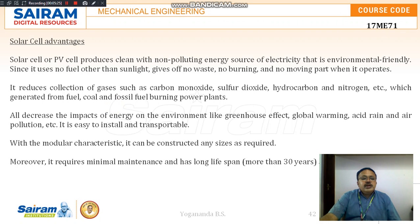Solar cell advantages: The PV cell produces a non-polluting, environmentally friendly source of electricity. Since it uses no fuel other than sunlight, it produces no waste and no burning takes place. There are no moving parts, and it reduces the production of gases such as carbon monoxide, sulfur dioxide, hydrocarbon, and nitrogen, which are generated from burning fuel, coal, and other fossil fuels in power plants.